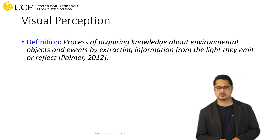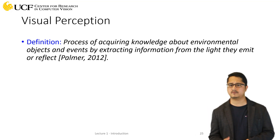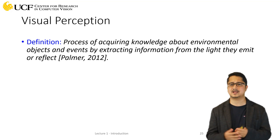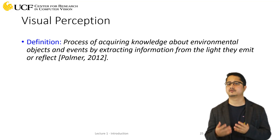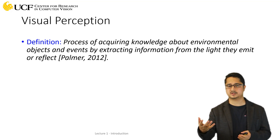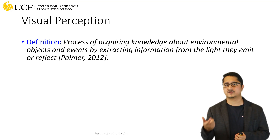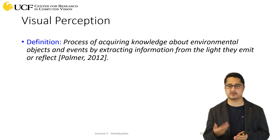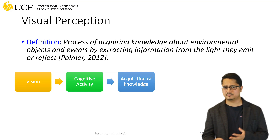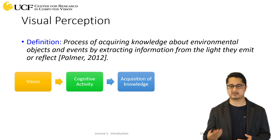Let's first try to understand the definition of visual perception. By definition it's the process of acquiring knowledge about our environment. There might be different objects and different events happening, so we want to extract semantically meaningful information from these objects and events. Light is emitted and reflected by these objects, and that light and reflection is actually used to perceive these objects and make interpretations about them. There are multiple steps: first there is vision, then there is some cognitive activity happening, and then there is the acquisition of knowledge.